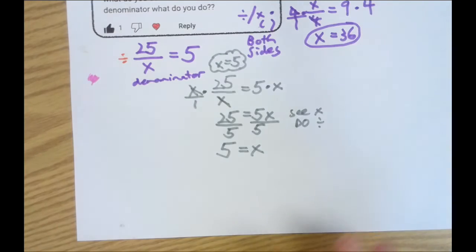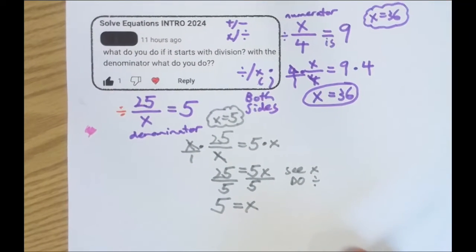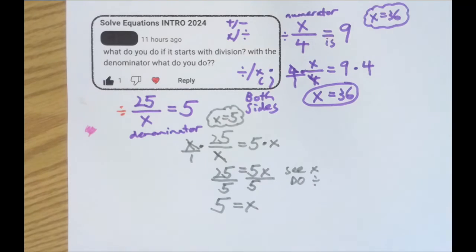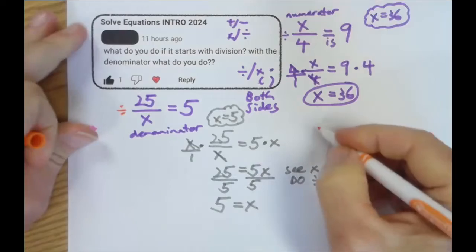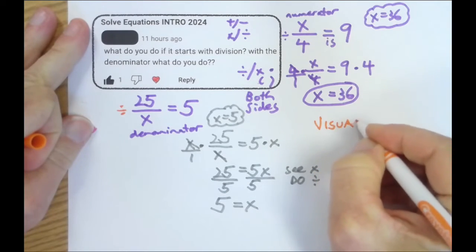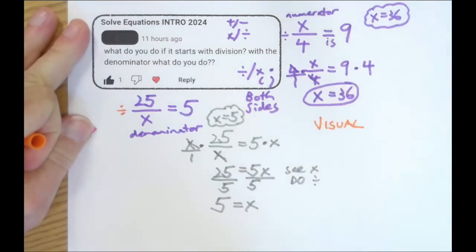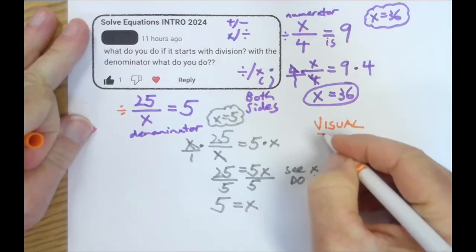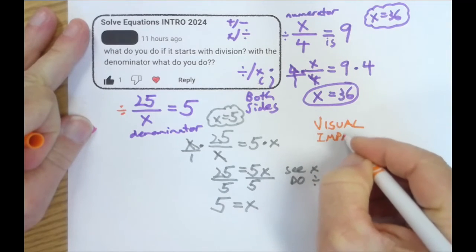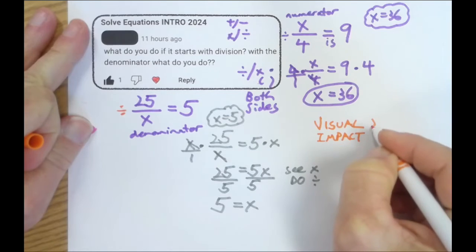Okay. Let's look, now that we have the short answer. The short answer is multiply both sides by the denominator. And the longer answer would be, let's look at what's the visual impact here. Is there some kind of shortcut now that we know how to do it and why it works? Is there some kind of visual shortcut we can use?